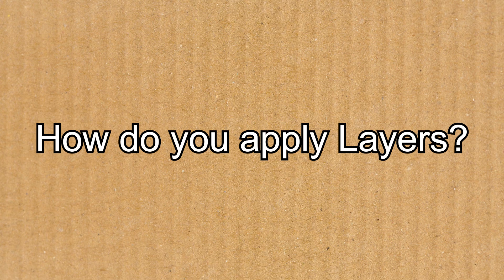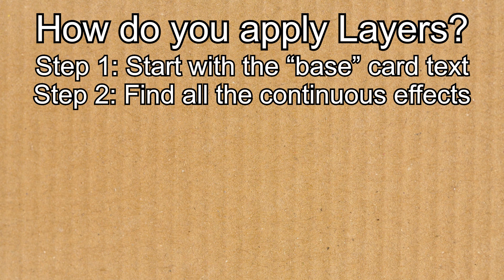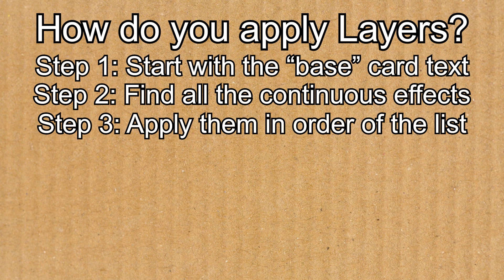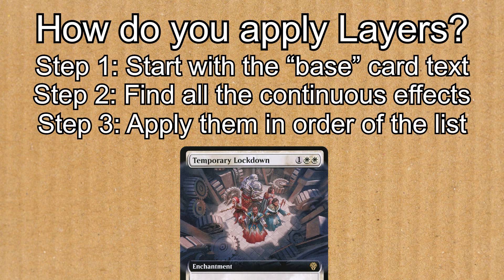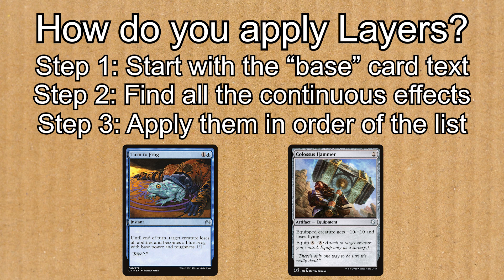Now that we know what the layers are, how do we apply layers to permanents? Well, firstly, you start with the original card and its base oracle text. You then find all the continuous effects that would be applied to the card, and then proceed to apply them in order from top to bottom of the layers list. The key thing to note is that once you apply a layer, it effectively gets locked in, and any subsequent layers won't affect them. Now, there are some cards like Turn to Frog or Colossus Hammer that affect multiple layers, so it's important to keep those in mind too.